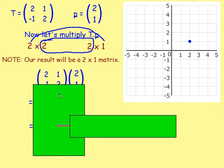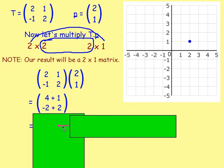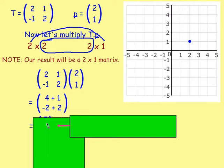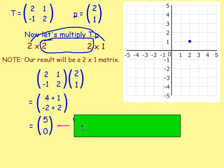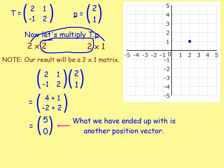So let's multiply them together. We've got our transformation matrix multiplied by the position vector, which is the matrix [2, 1]. To find the entries in our resulting 2 by 1 matrix: for the entry in the first row and first column, we multiply the first row by the first column — 2 times 2, add 1 times 1, giving us 4 + 1. For the entry in the second row and first column, we multiply the second row by the first column — negative 1 times 2, add 2 times 1. That gives us [5, 0].